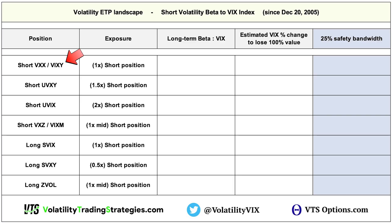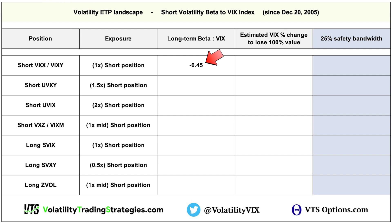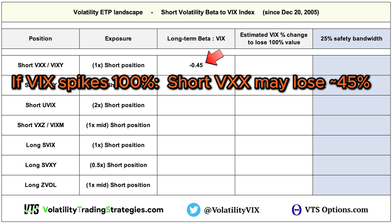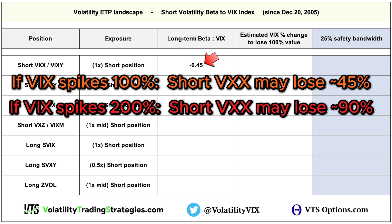If you were short the VXX — and VIXY is materially the same thing as VXX, just an ETF instead — then your beta to the VIX is now opposite: minus 0.45. So if the VIX were to double, which is the same as saying it goes up 100%, you wouldn't lose 100% of your short VXX position because the beta is only minus 0.45. You would lose 45% of your money if the VIX doubles. If the VIX goes up 200%, you'd lose 90%.